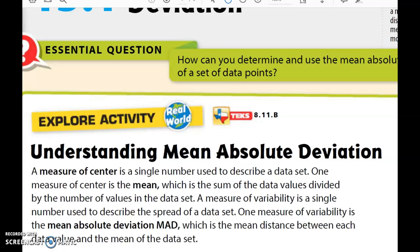A measure of variability is going to be a single number used to describe the spread of a data set. Spread is another word for range, basically the highest value minus the lowest value, which will give you your spread or also known as your range.